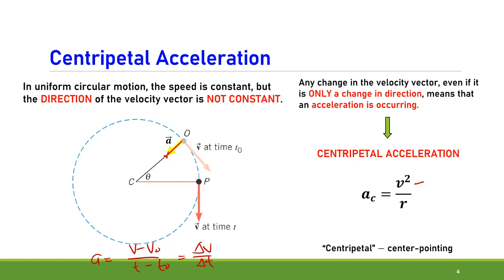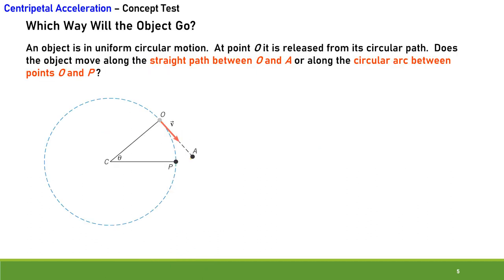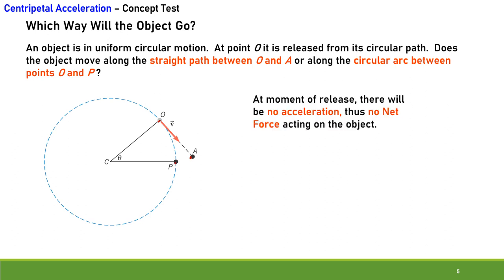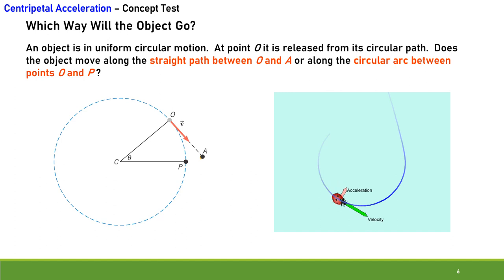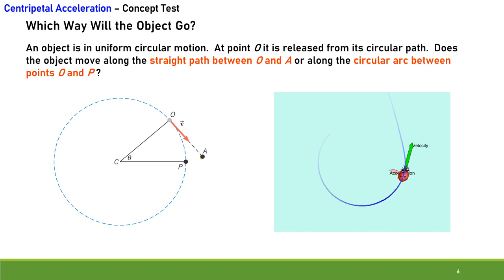Centripetal means center-pointing. Consider an object in uniform circular motion that is released from its circular path at point O. Does the object move along the straight path between O and A, or along the circular arc between O and P? At the moment of release, there is no acceleration, thus no net force acting on the object. By Newton's first law, it will remain in constant speed along a straight line. So the object moves along the straight path between O and A.